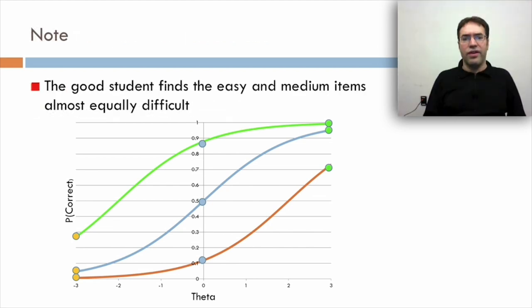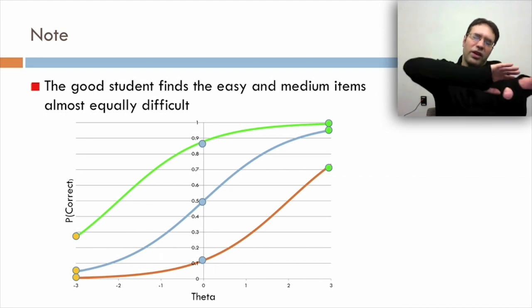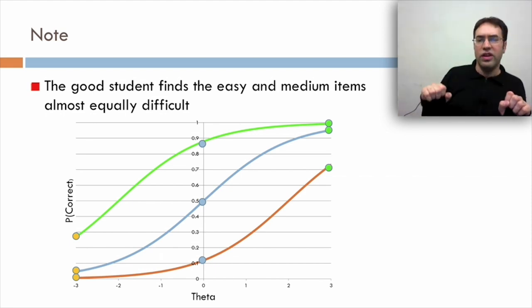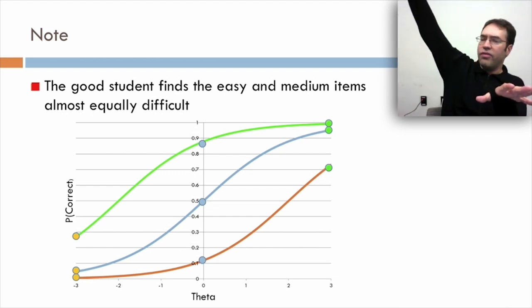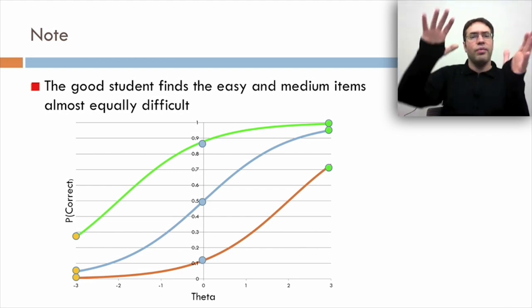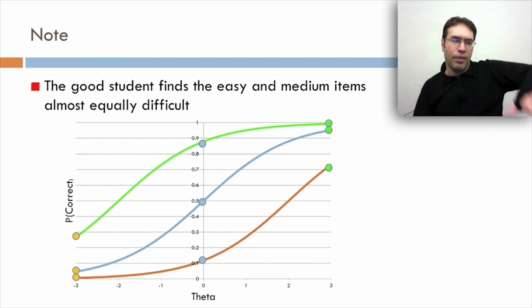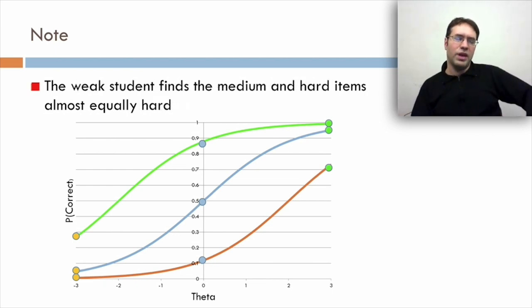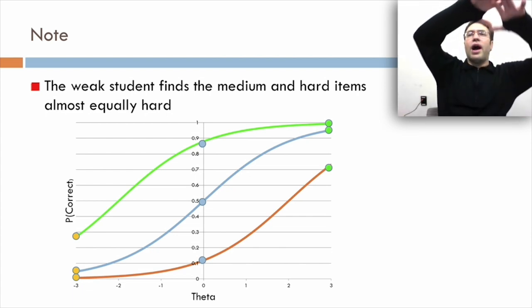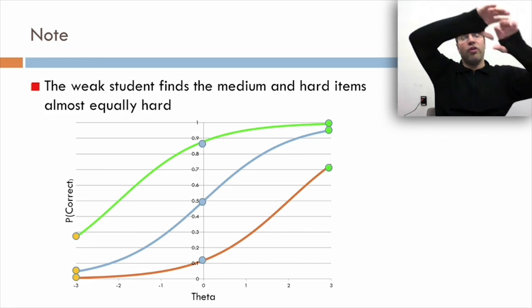Now you notice the good student finds the easy and medium items almost equally difficult. Way up at the top right corner of the graph, if the item is easy or medium it doesn't really matter if the student's really good. Similarly, at the bottom, the weak student finds the medium and hard items almost equally hard. So IRT is most informational close to the middle for items and close to the middle for students.